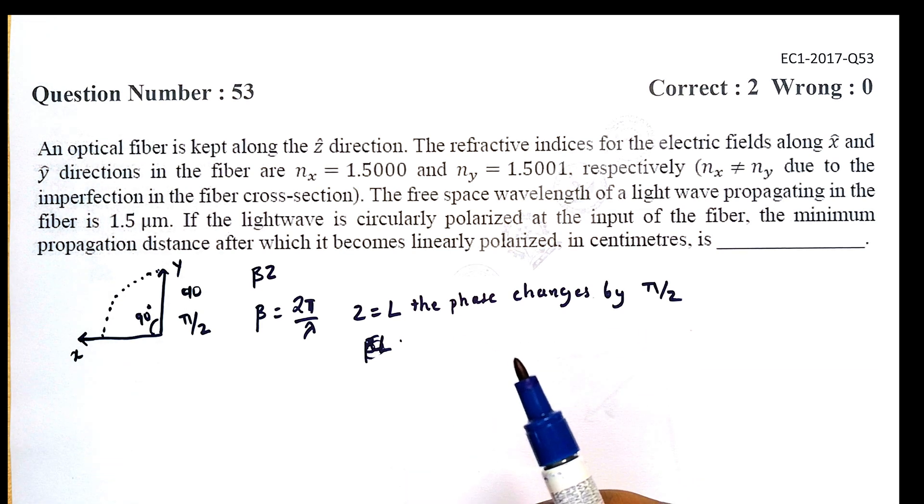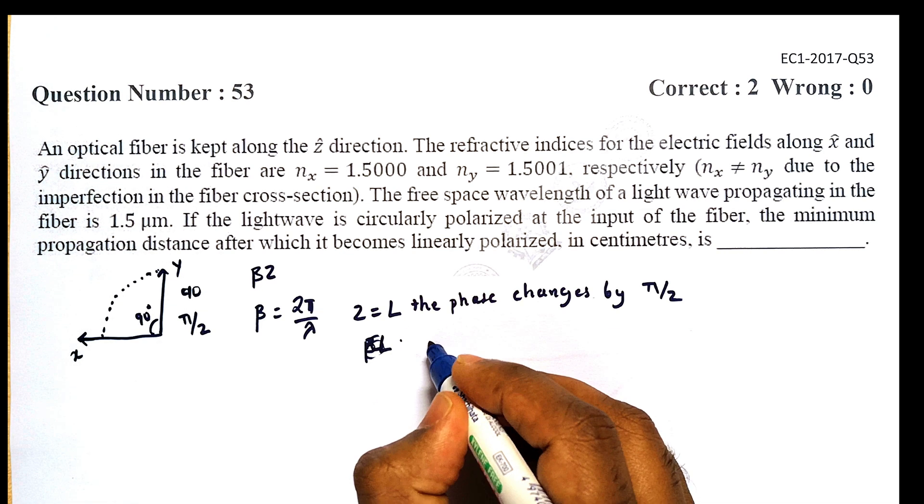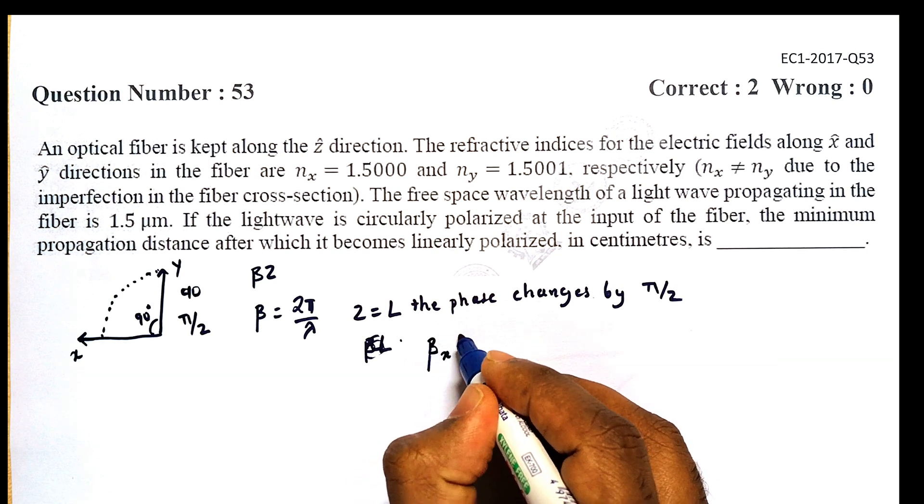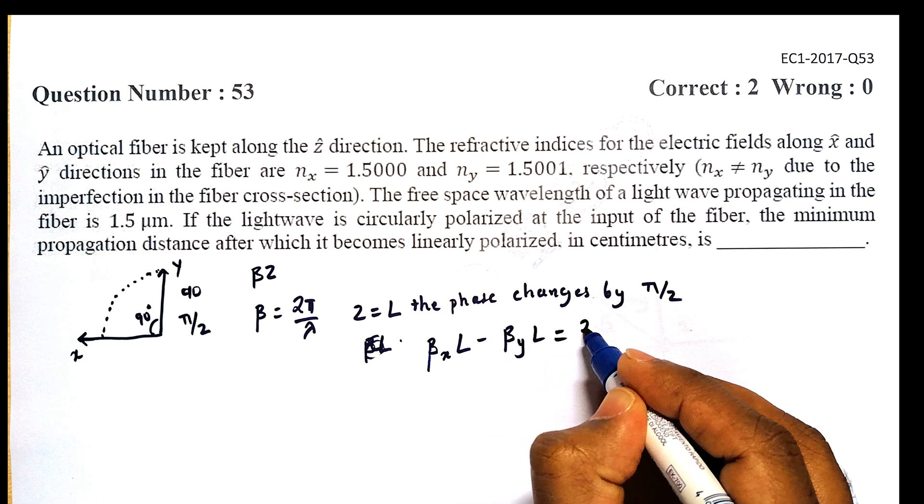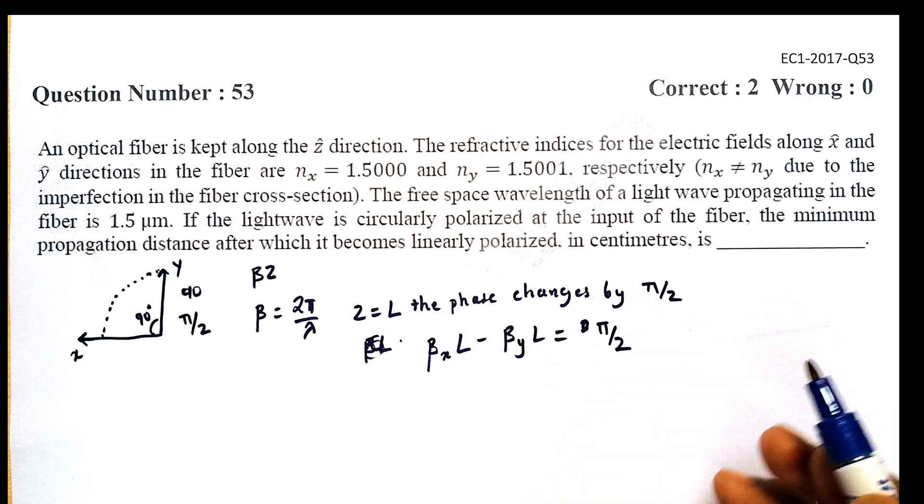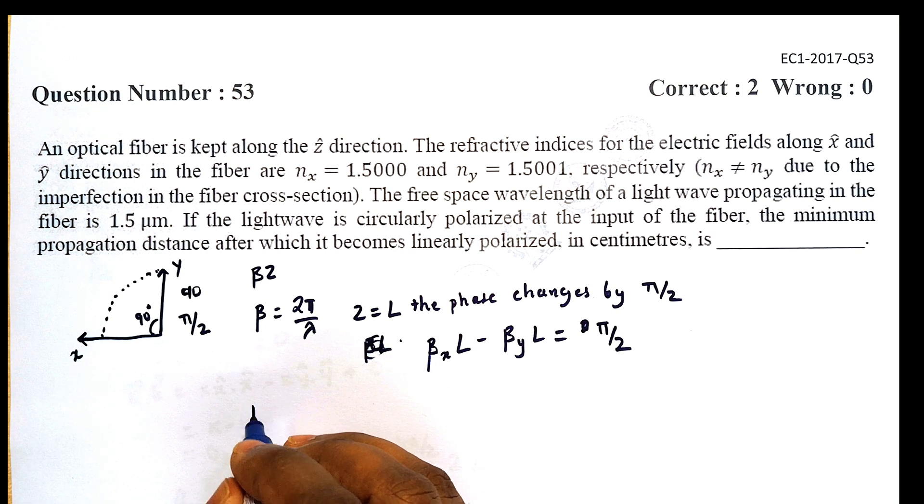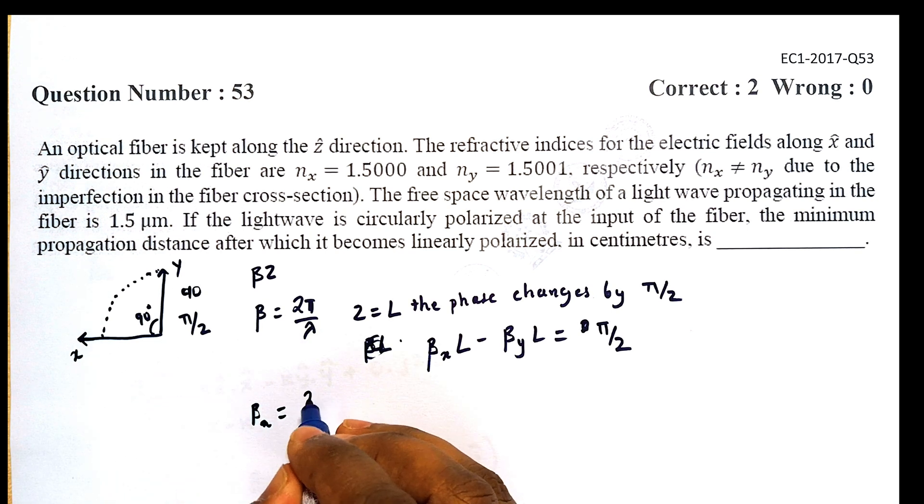As we said before, that means β_x·L - β_y·L = π/2. We know that β_x = 2π/λ_x and β_y = 2π/λ_y.